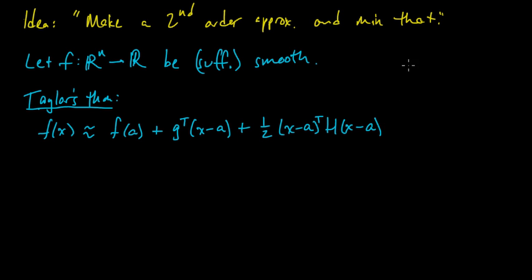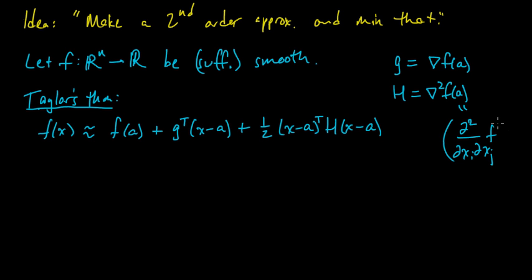So this is Newton in multiple dimensions, times the Hessian times x minus a. So this is the second order approximation, and here g is the gradient of f evaluated at a, and H is the Hessian, which is the matrix of second derivatives. So it's all the second derivatives partial with respect to x_i and x_j for i and j going from 1 to n, evaluated at a.